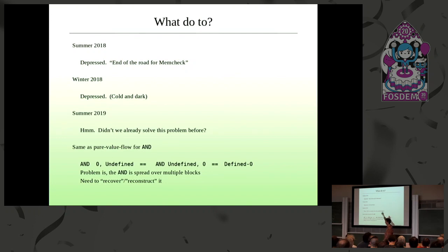So summer 2018, I was kind of depressed because I thought it was like, well, this is the end of the road for Memcheck. It's like Memcheck defeated by optimizing compilers after 15 years of valiantly struggling against optimizations. And then it was winter, and winter sucks. I don't like winter much, so I was still depressed.